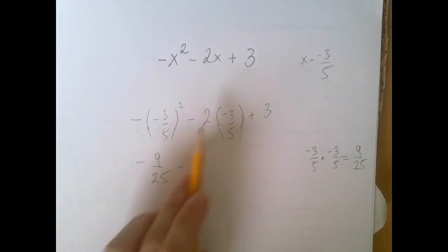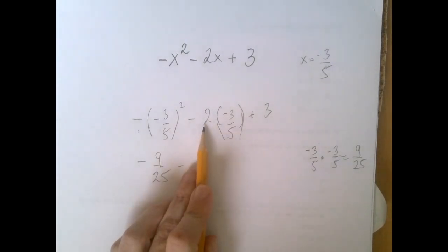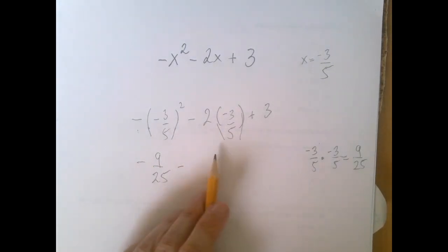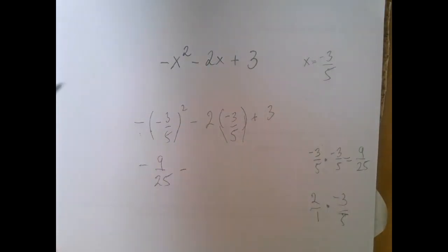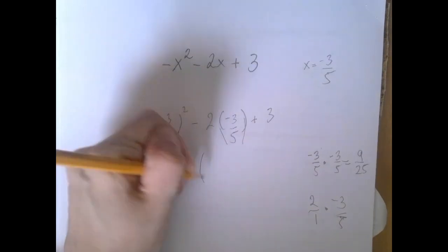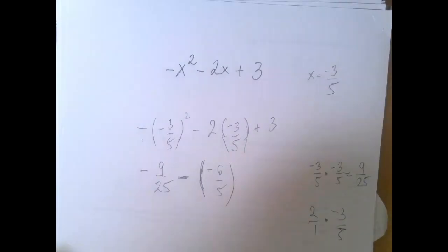Now, the minus was carried, so now we do the multiplication 2 times negative 3 over 5. 2 is the same as 2 over 1. 2 times negative 3 is negative 6. 1 times 5 is 5. So we are subtracting negative 6 over 5.